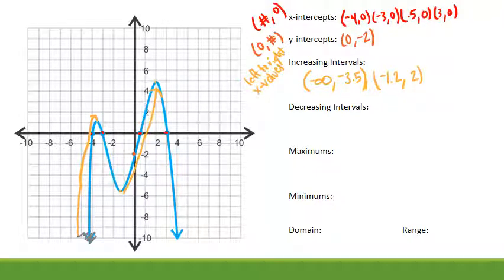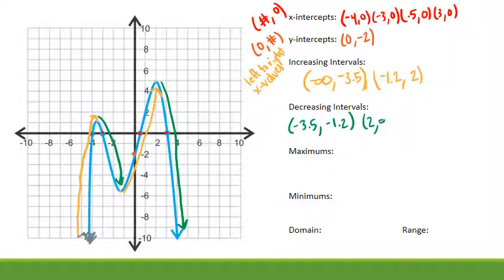As I read the graph left to right, I'm decreasing here and decreasing here. So I'm decreasing from negative 3.5 all the way to negative 1.2. And then I'm decreasing from two till forever. So till infinity because it's the x values. Don't forget, we got to use the x values. I'm going to keep stressing that because it's a common mistake that we all make.